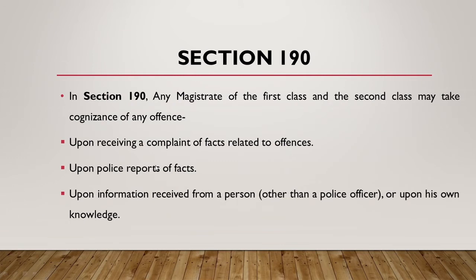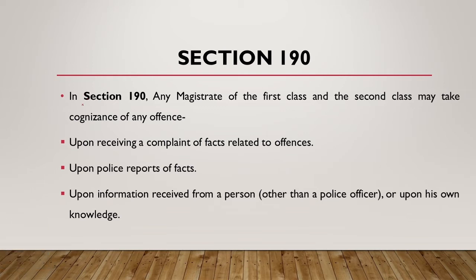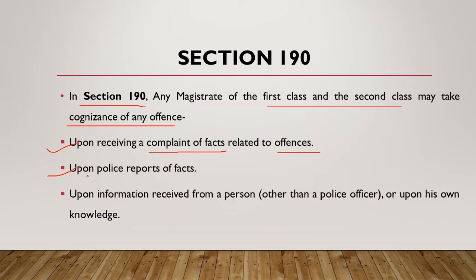Now we'll be dealing with Sections 190 to 192. Under Section 190, a Magistrate of First Class as well as a Magistrate of Second Class can take cognizance of any offenses upon receiving a complaint of facts relating to offenses, through police reports, or through information received from a person other than a police officer, or upon his own knowledge.